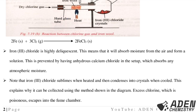Iron(III) chloride sublimes when heated and condenses into crystals when cooled, which is why it can be collected as sublimate in the flask. Excess chlorine, which is poisonous, escapes into the fume chamber. The substance that can replace anhydrous calcium chloride is calcium oxide. The advantage of calcium oxide is that, being basic, it reacts with acidic chlorine gas. The equation is: 2Fe(s) + 3Cl2(g) → 2FeCl3(s).